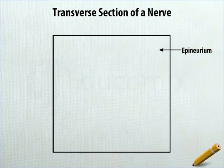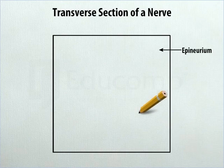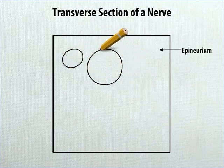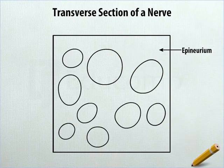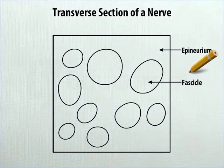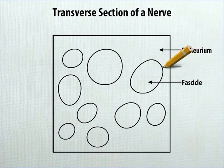Scattered throughout the epineurium, draw some irregular round shapes of different sizes. Label any one shape as fascicle and its boundary as perineurium.